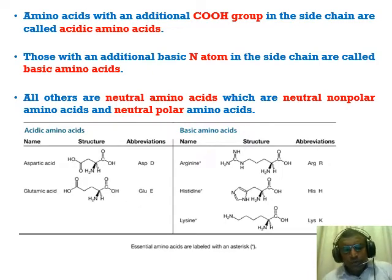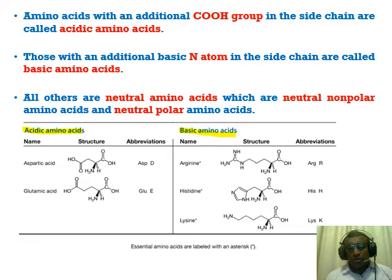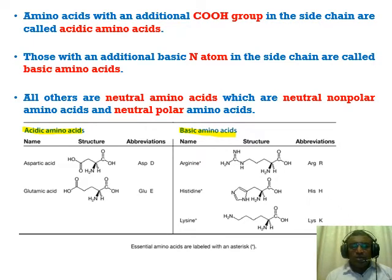There are also acidic amino acids — aspartic acid and glutamic acid — which have an additional carboxylic group beyond the general amino acid structure. This extra carboxylic group can donate a hydrogen ion, making them acidic. Basic amino acids have an additional amino group, which can accept hydrogen ions, and therefore they are referred to as basic amino acids. There are three basic amino acids.